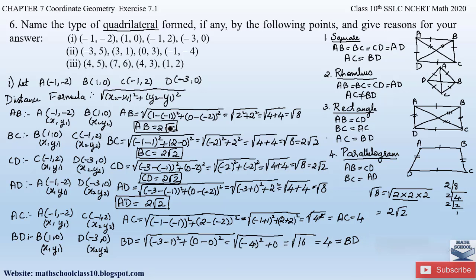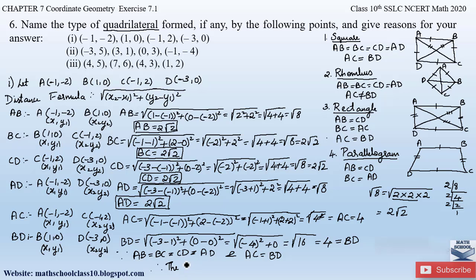We can observe that all four sides of the quadrilateral are equal and also diagonal AC = BD = 4. Therefore the type of quadrilateral formed here is a square. Since AB = BC = CD = AD and also the diagonals AC = BD, therefore the type of quadrilateral formed is a square.